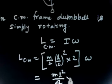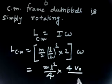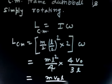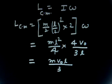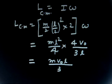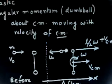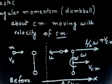Plugging in omega = 4V0/(3L): L_cm = (ML²/4)*(4V0)/(3L). The 4 cancels, giving L_cm = M*V0*L/3. Also, u comes out to be negative, meaning the ball actually continues in the same direction (not bouncing back as assumed). So let us move on to the next problem.